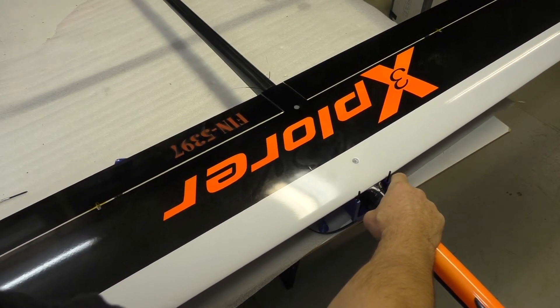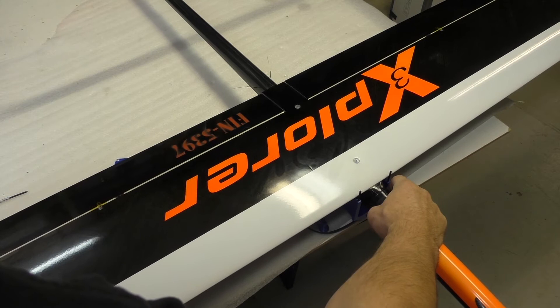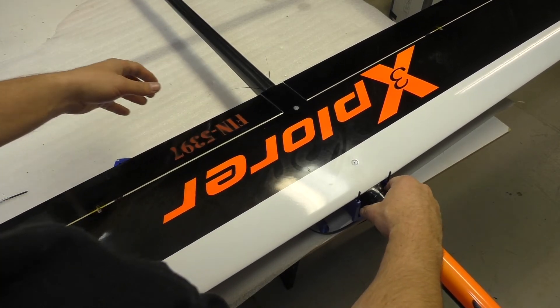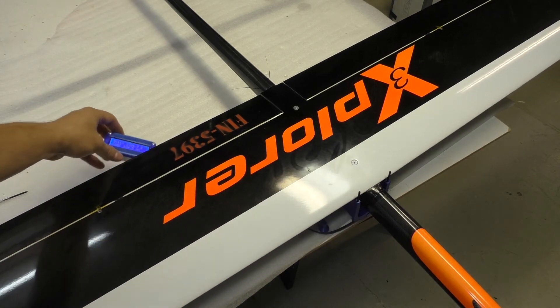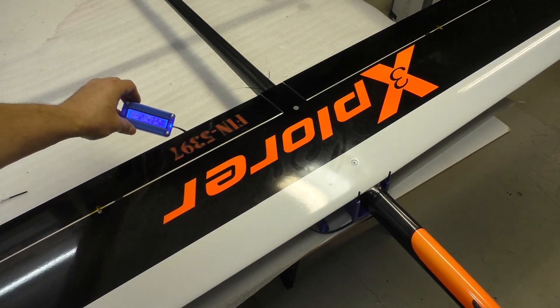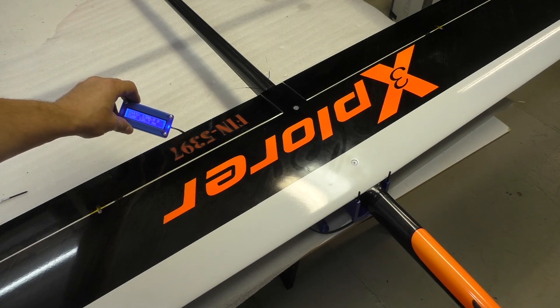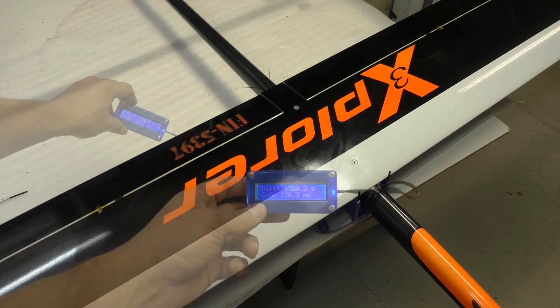This is a 3.8 meter Explorer that we're putting on here. Let's see if I get it to fit. I wouldn't be able to see this under the wing otherwise, but it tells me that the plane weighs about 1.3 kilos and 126 millimeter COG, which for me is really good, a little bit forward.